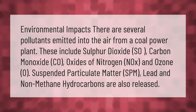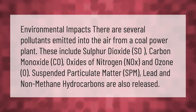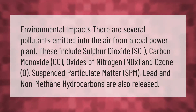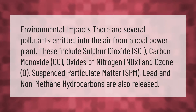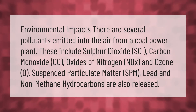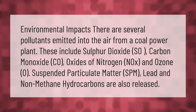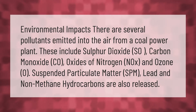There are several pollutants emitted into the air from a coal power plant. These include sulfur dioxide (SO2), carbon monoxide (CO), oxides of nitrogen (NOx), and ozone (O). Suspended particulate matter (SPM), lead, and non-methane hydrocarbons are also released.